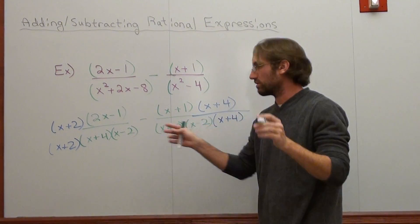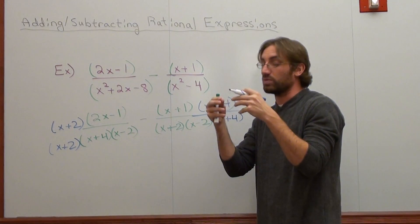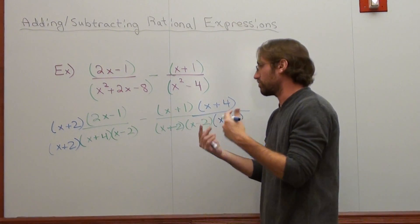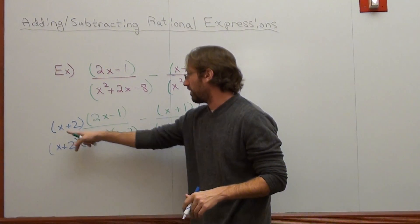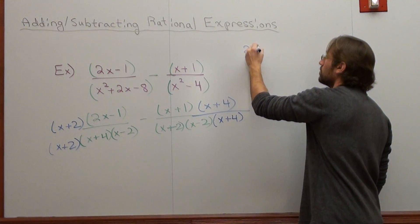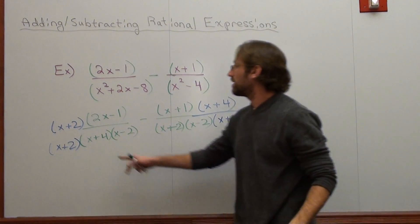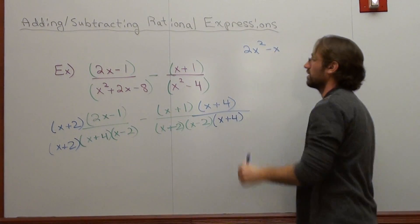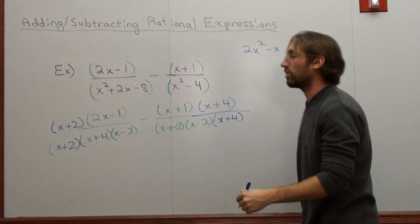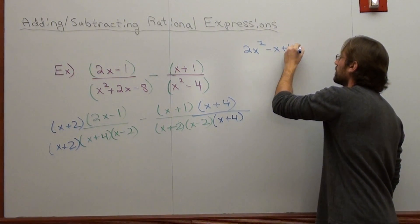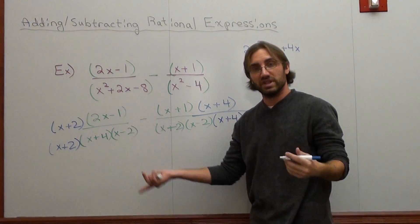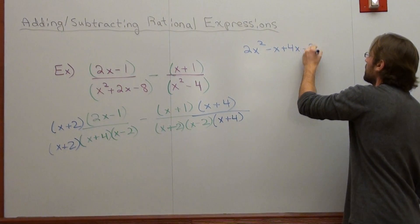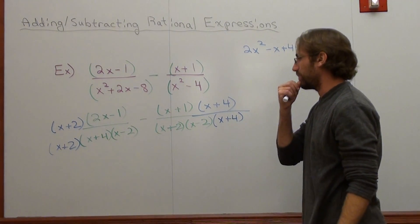Now I'm just going to FOIL or distribute the numerators and then subtract them accordingly. x times 2x is 2x squared. x times negative 1 is negative x. 2 times 2x is 4x. 2 times negative 1 is negative 2.